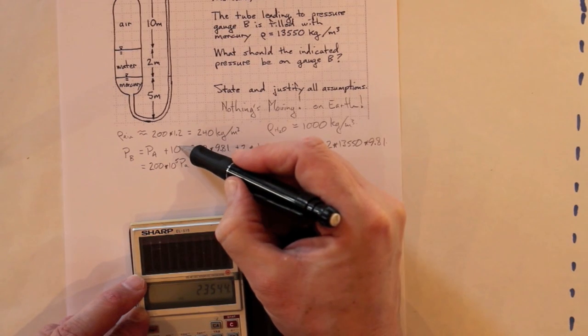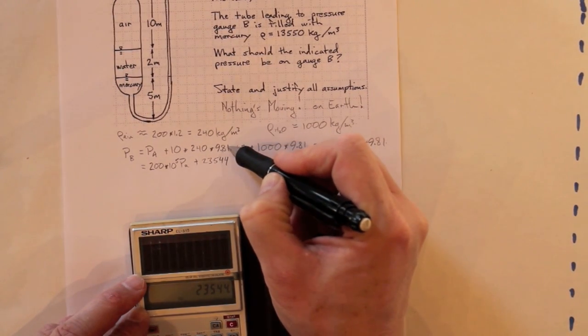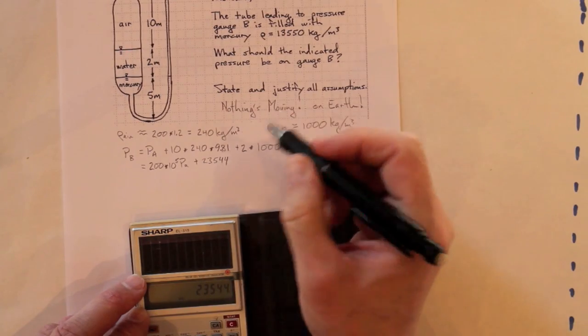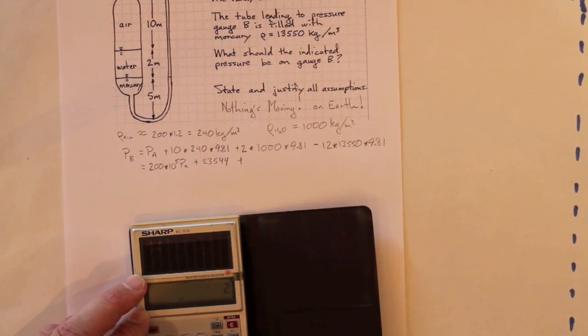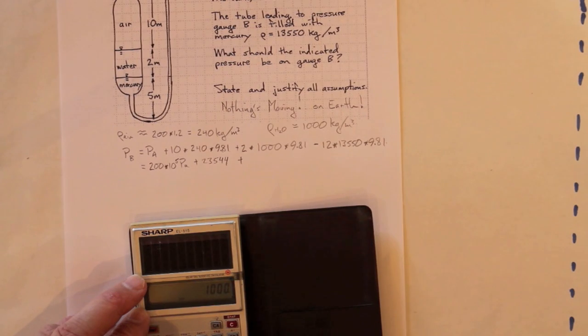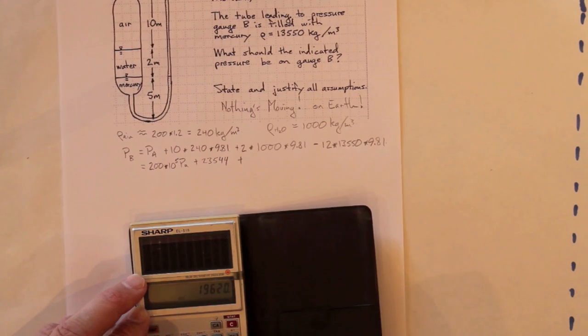And that's meters, kilograms per meter cubed, meter squared per second. So, that's in Pascals as well. Plus, 2 times 1000 times 9.81 is 19,620.